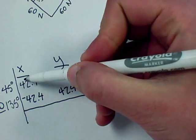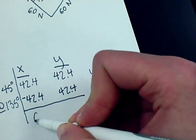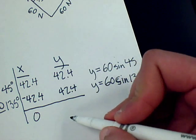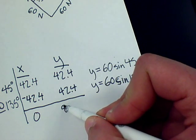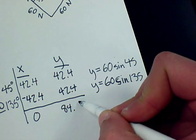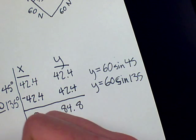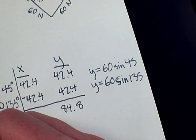So now we take our totals for the x and y component columns. So for x, the total would be, for these two would be 0. And then for these two, it would be 84.8.